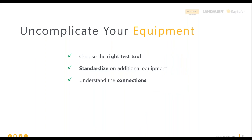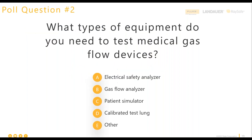To uncomplicate your test equipment, you need to get three things right: first, choose the right test equipment; second, standardize all of the equipment needed; and third, understand and document your connections because they are different from model to model. Before we jump into those three points, here's our next poll question: what types of equipment do you need to test medical gas flow devices? A) electrical safety analyzer, B) gas flow analyzer, C) patient simulator, D) calibrated test lung, E) other.